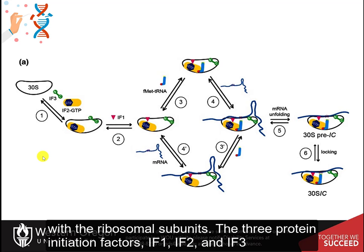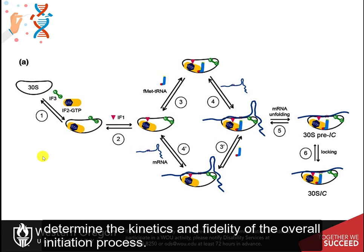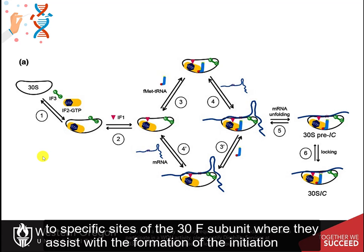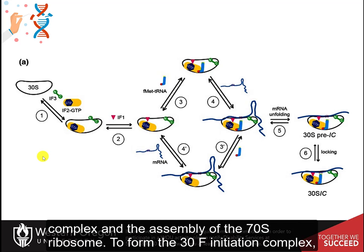The three protein initiation factors IF1, IF2, and IF3 determine the kinetics and fidelity of the overall initiation process. The three IFs are bound one copy each to specific sites of the 30S subunit, where they assist with the formation of the initiation complex and the assembly of the 70S ribosome.